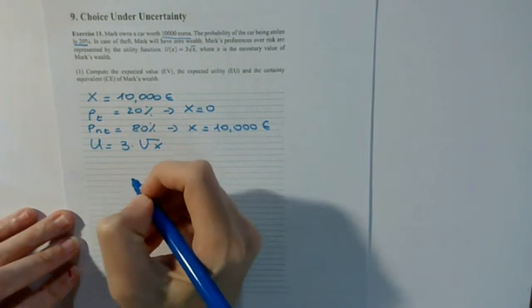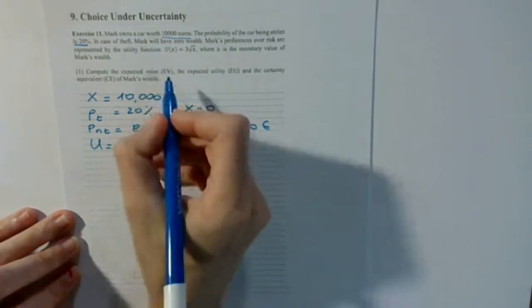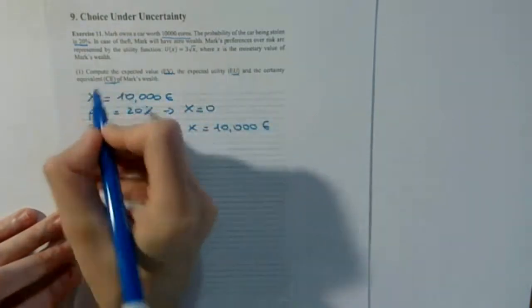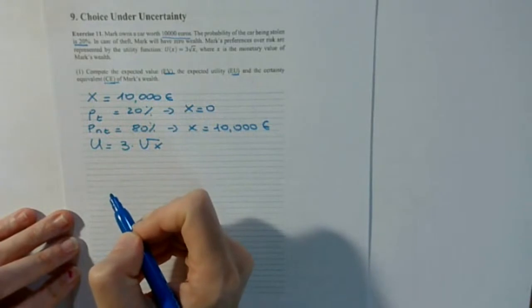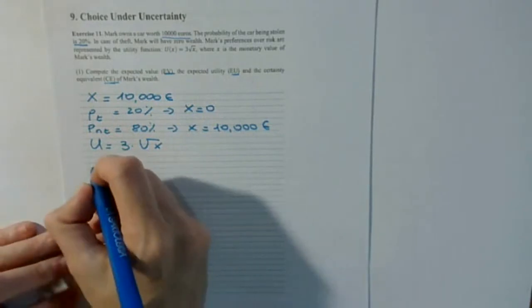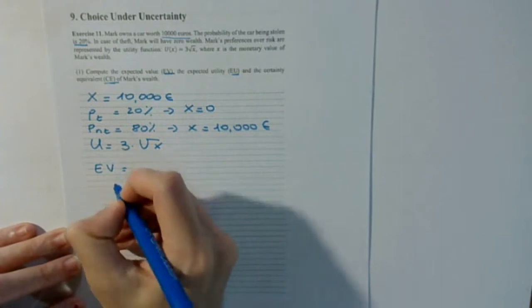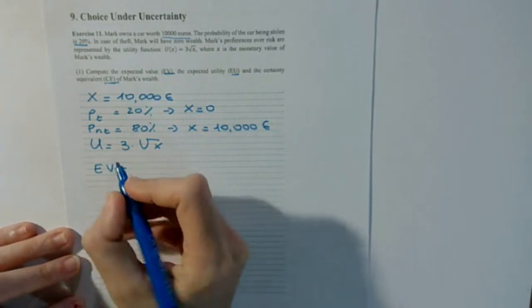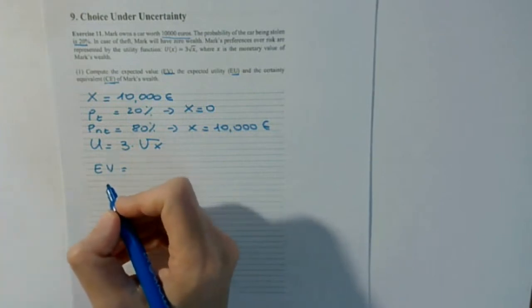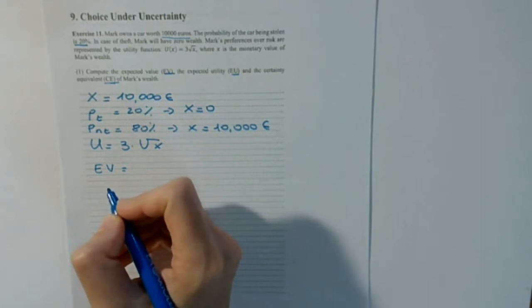We have to compute the expected value, the expected utility, and the certainty equivalent. Let's start with the expected value. The expected value is the amount of money that on average I expect to receive from participating in the lottery.